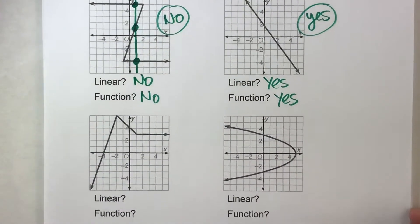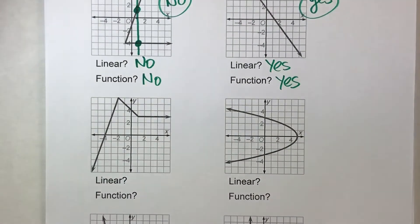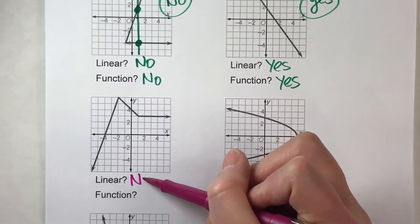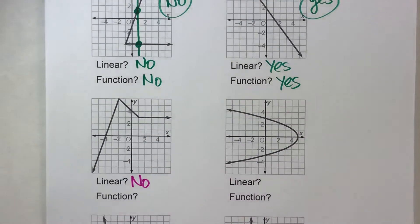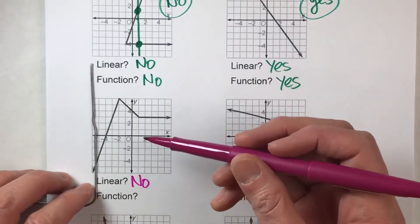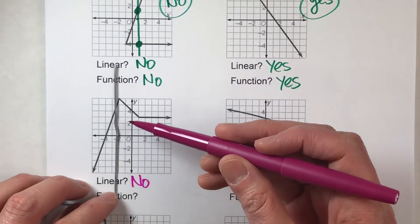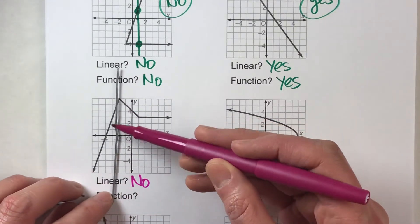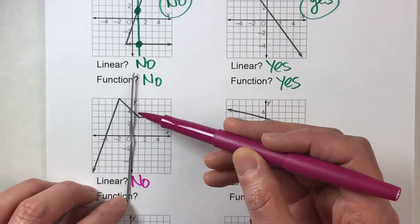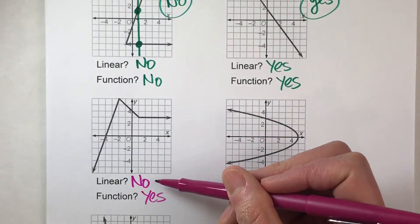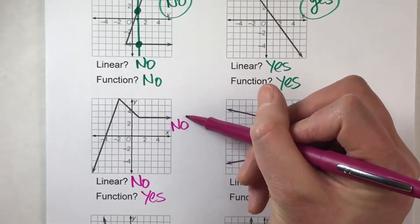Let's try these two. Here we've got another interesting looking graph that kind of zigzags. This is not linear because it's not made up of one straight line. Is it a function though? Here's my vertical line — notice as I move it across the coordinate grid it never touches the graph in more than one spot; it only touches in one. So it is a function, but it's not linear. So no, this is not a linear function.